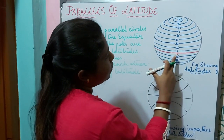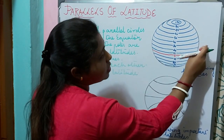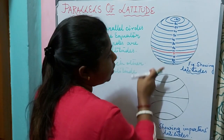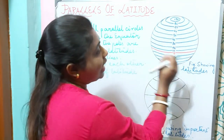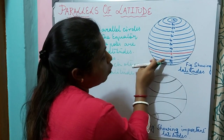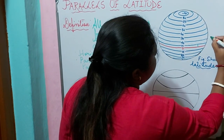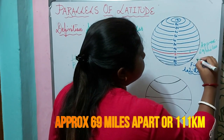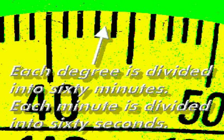Look at this figure — you can see that the latitudes are running from east to west. So latitudes run in an east-to-west direction, but they measure distance north or south from the equator. Each degree of latitude is approximately 69 miles apart, that means 111 kilometers.